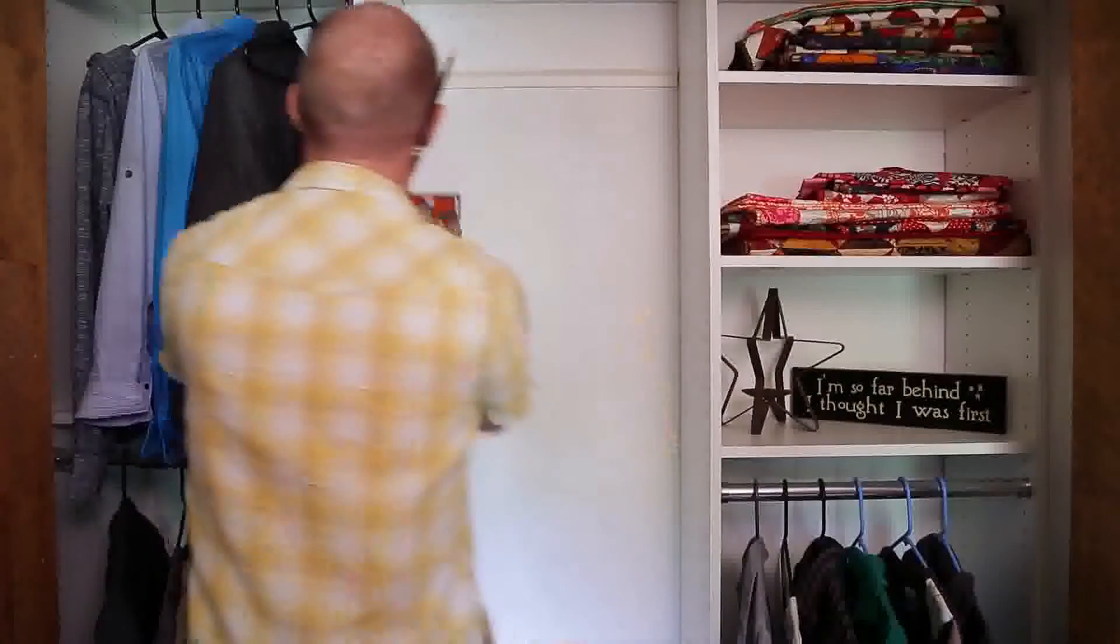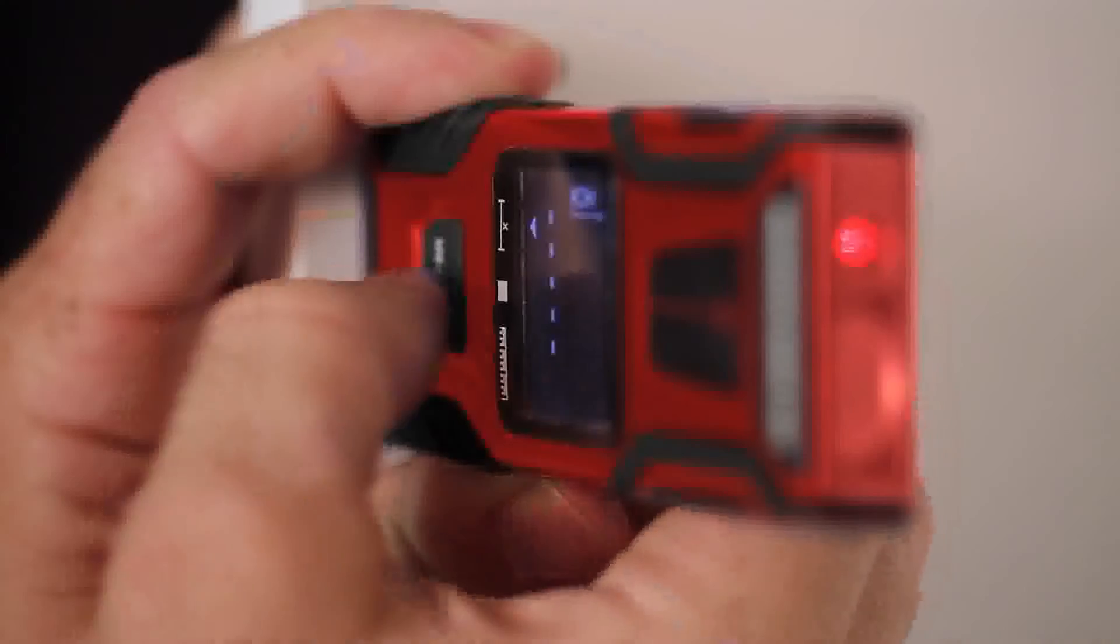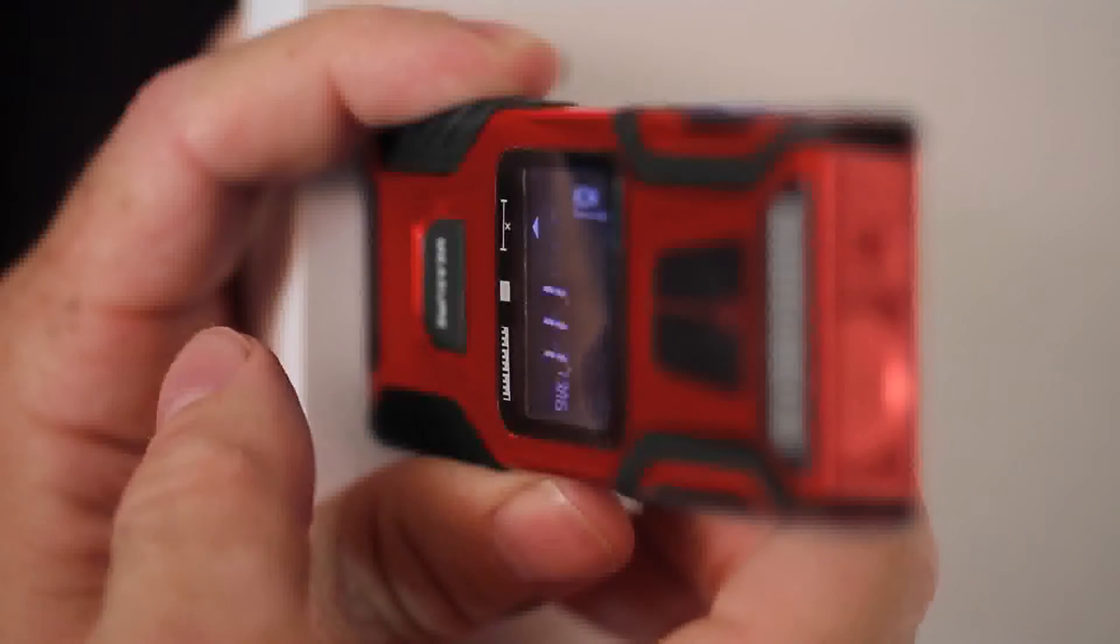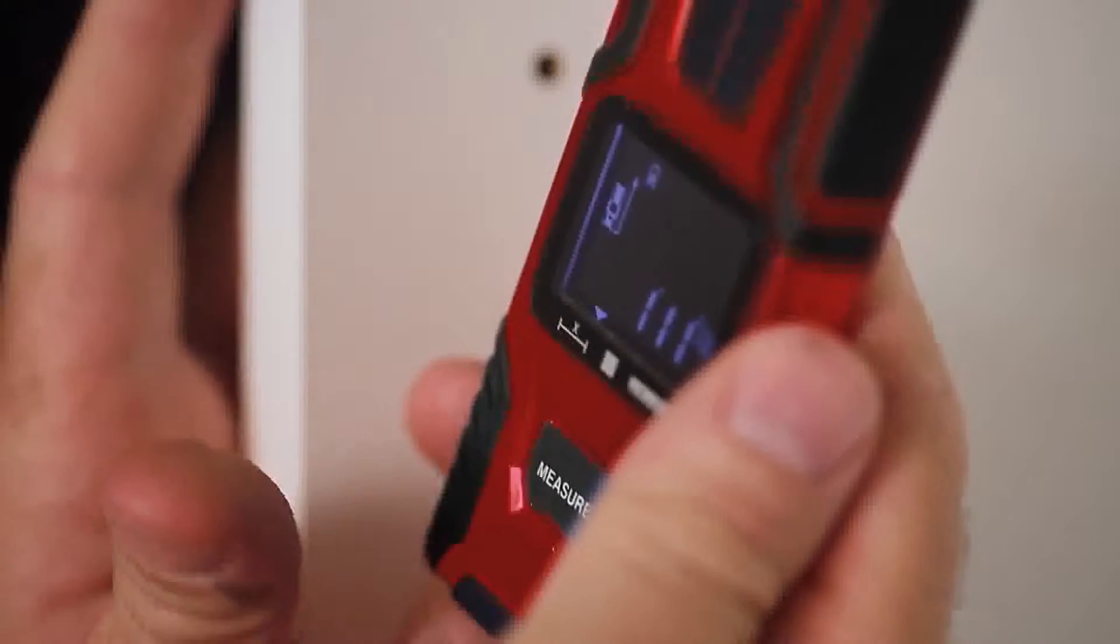To turn on the device, push the power button. Then press the measure button to activate the laser. Aim it at a flat, even surface and press it a second time to take the measurement. It's that simple.